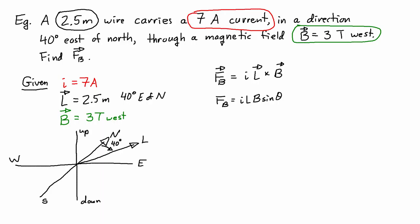So the L vector is between north and east and it's actually 40 degrees rotated away from north, which means that it would be 50 degrees from the east if we were to add those up because north and east should be 90 degrees apart. The next thing is to look at the magnetic field, which is to the west.